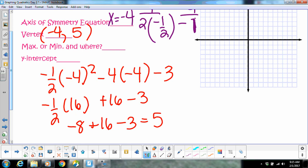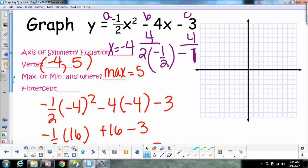All right. Min or max, was a positive or negative? Negative. So, it's going to be a max at five. And then, what was our y-intercept? Negative three.